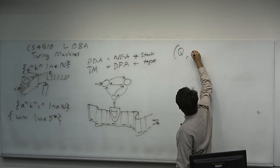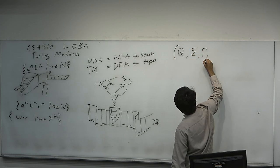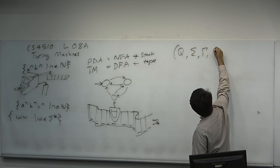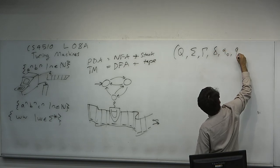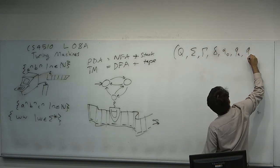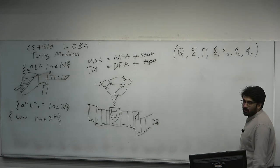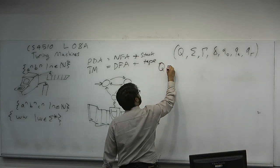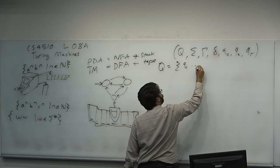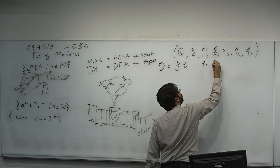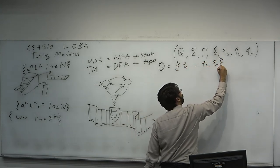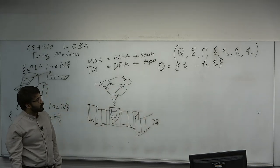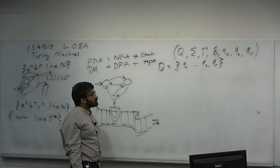The formal definition has components: Q (finite set of states), sigma (input alphabet), gamma (tape alphabet), delta (transition function), Q0 (start state), QA (accept state), and QR (reject state). There are three special states this time — QA and QR. Q is the set of states and you transition between them according to the transition function delta.